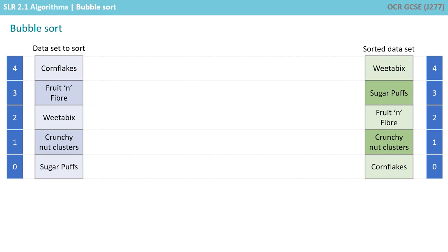So: Cornflakes, Crunch Nut Clusters, Fruit and Fibre, Sugar Puffs, and Weetabix at the top. We're now going to go through the steps of the algorithm to see how we can get to the sorted dataset.